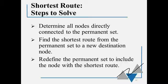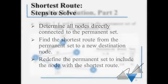In summary, to solve a shortest route problem, we're going to look at all the nodes that are directly connected to the permanent set. We're going to find the shortest route from the permanent set to any of the other destination nodes. And then we're going to include that in our permanent set to redefine the permanent set. And then we're going to continue this until we have a shortest route to all the nodes.